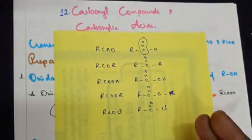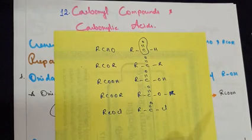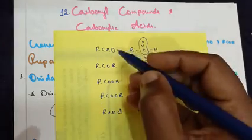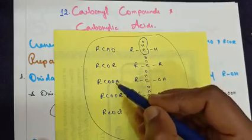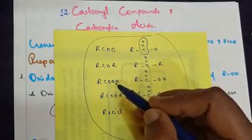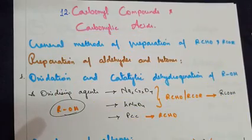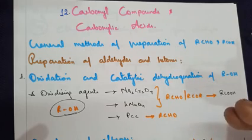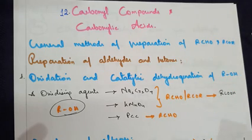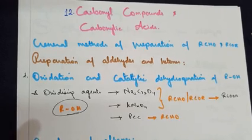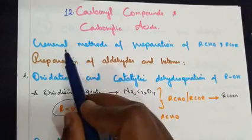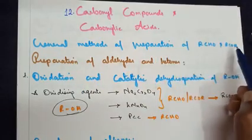In the previous lesson, you learnt about three functional groups — alcohol, phenol, and ether. In this lesson, you will learn all the remaining types of functional groups, namely aldehyde, ketone, carboxylic acid, ester, and acetyl chloride. As usual, I will start with preparation first, then move on to chemical properties followed by physical properties in terms of boiling and melting point, structures, solubility, and hydrogen bond formation.